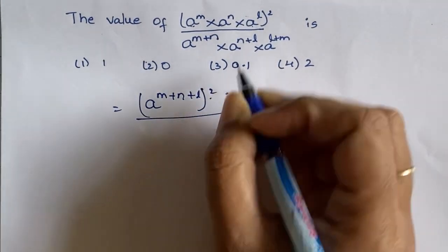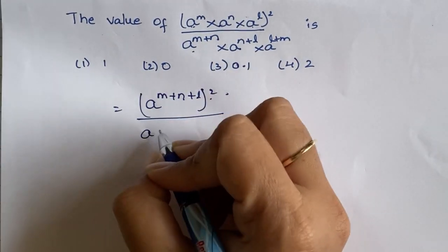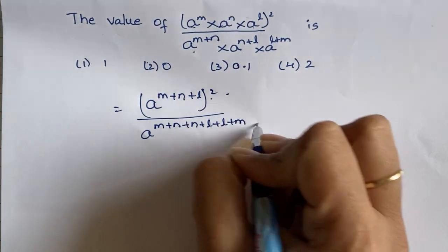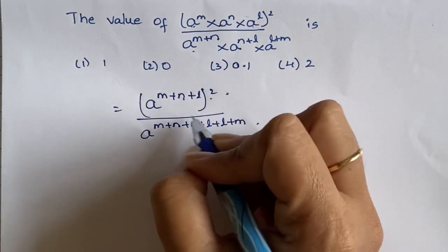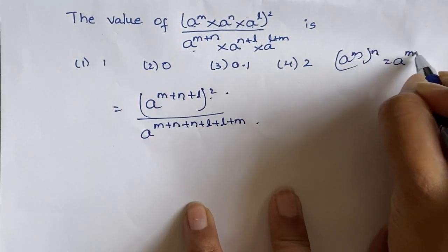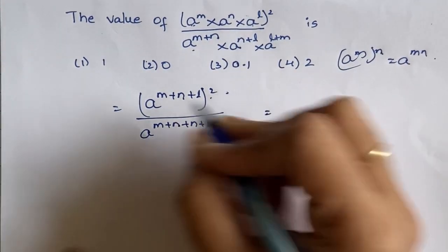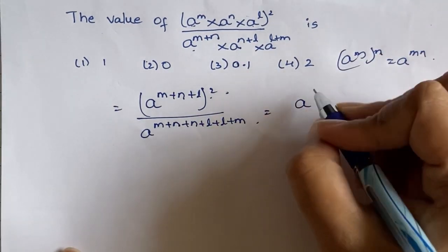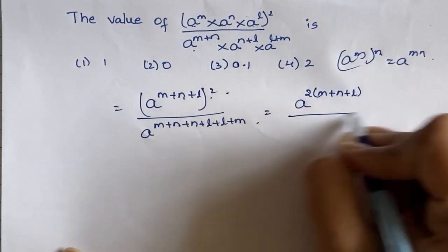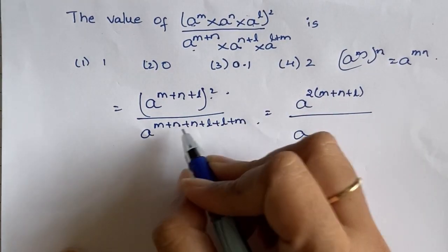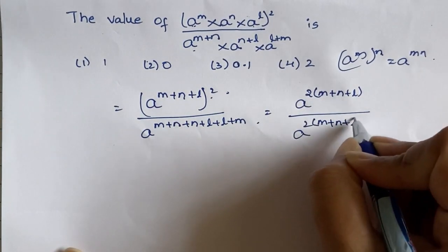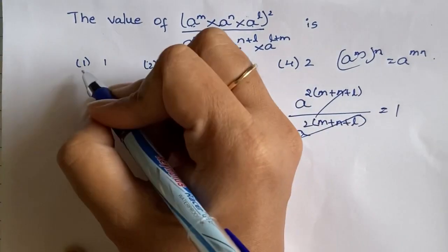Next, a to the power m plus n plus l, whole square. Using the formula (a^m)^n = a^mn, this becomes a to the power 2 times of m plus n plus l, which expands to a to the power 2m plus 2n plus 2l. This cancels and we get 1. So 1 is the answer.